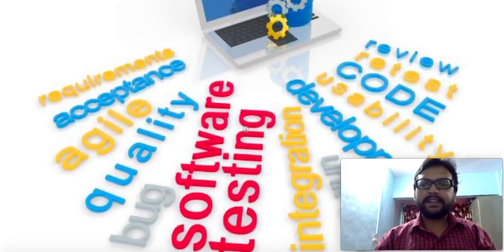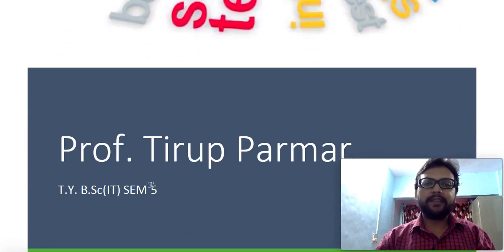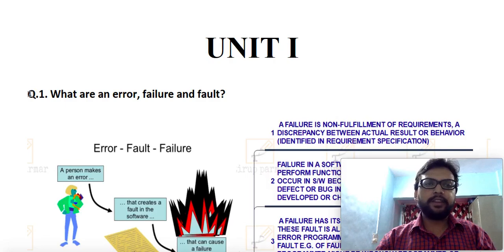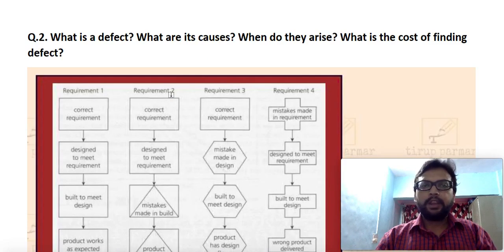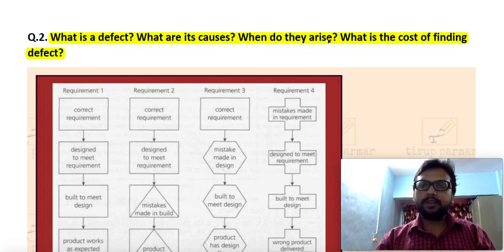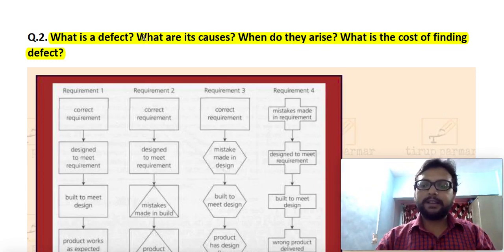Welcome to the lecture series on software testing for Semester 5 TYBACIT. My name is Professor Tirup Parmar. In the first lecture we already discussed the syllabus and the question about errors, faults, and failures. In this lecture we will continue with the question: what are defects, what are their causes, when do they arise, and what is the cost of finding defects? Remember, this question has already appeared in university exams two to three times.